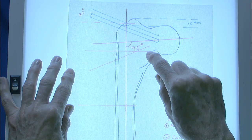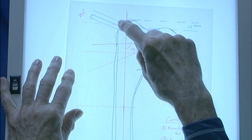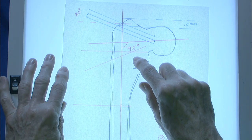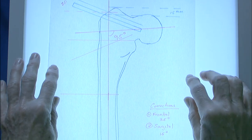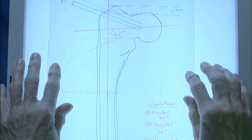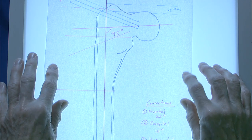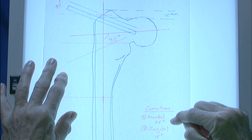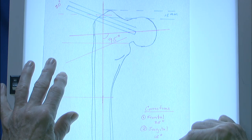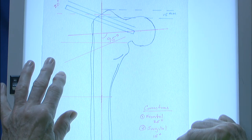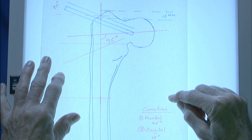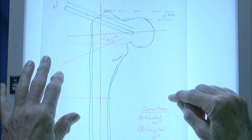All of these reference Kirschner wires will need to be transposed to your model before you go to actual execution. To summarize: we're dealing with a frontal plane correction of 25 degrees, sagittal 15 degrees, horizontal 20 degrees, and we want to regain approximately two centimeters of leg length in the process of this plan.